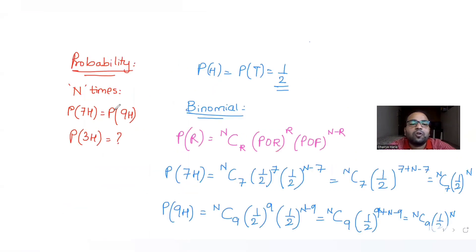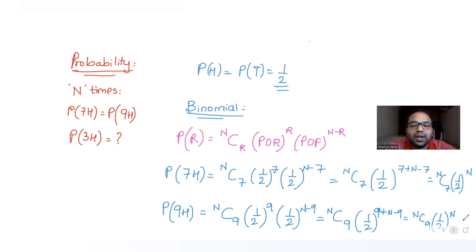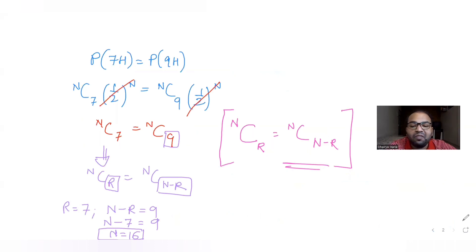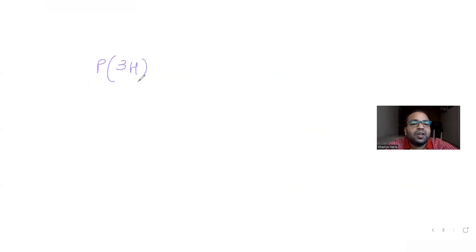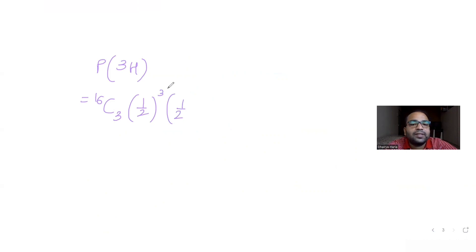Now we understand that we are doing 16 tosses in total. Let's find what the question asks: the probability of getting exactly 3 heads. P(3 heads) = 16C3 × (1/2)^3 × (1/2)^(16−3), which is 16C3 × (1/2)^16.